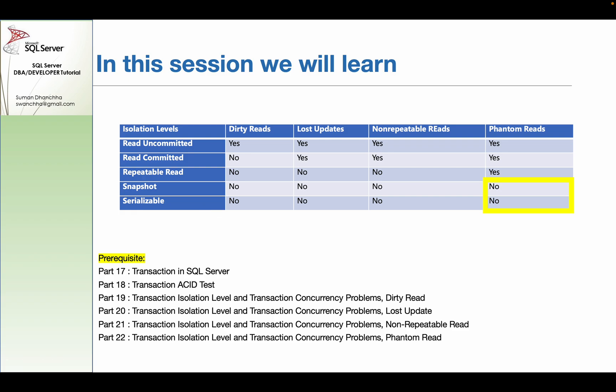When the transaction is executed, there is a lock to access a list of records. This means that when one transaction is executing, you can read the data from another transaction. If you have multiple transactions simultaneously executing, you need to use a certain number of resources. In Snapshot, we can use a lock to implement this.